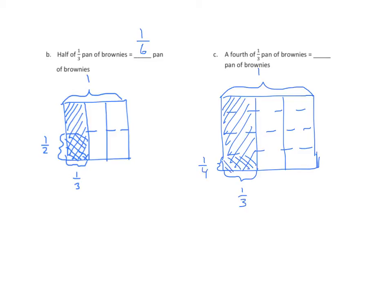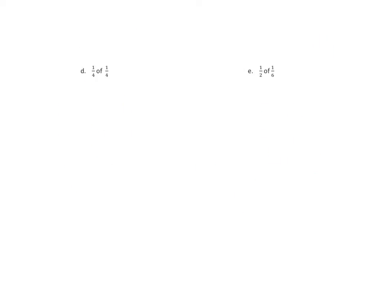The double-shaded portion is one of these — one out of how many? One out of twelve. So my denominator is twelve and my numerator is one. Moving right along.